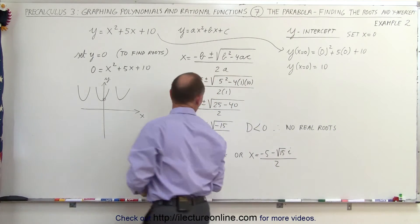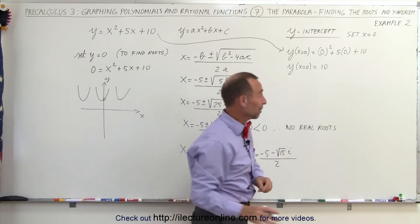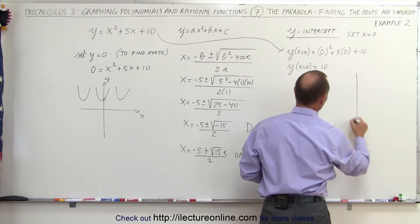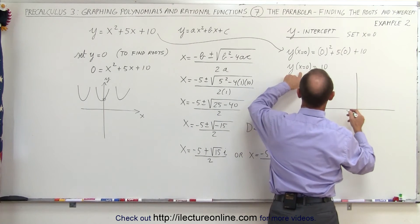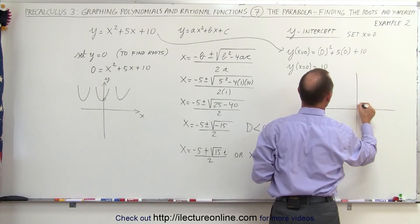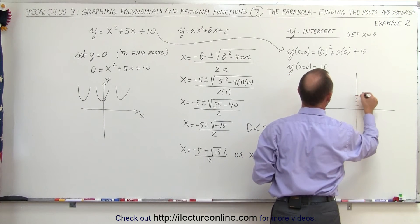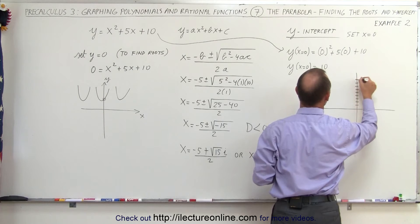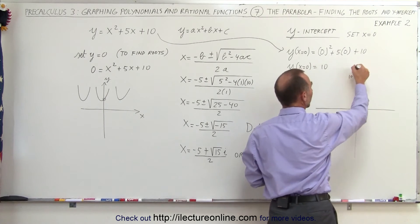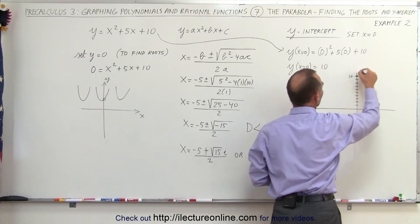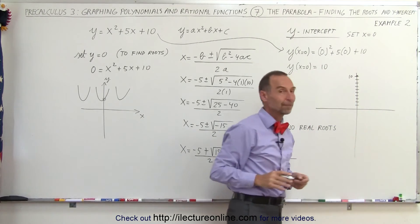So if we now draw a graph, I'm looking for room on my board to draw a graph. Let's do it over here. I know that the parabola will cross the y-axis at 1, 2, 3, 4, 5, 6, 7, 8, 9, 10, at y equals 10, right at that point. Now of course, we're not sure if the parabola looks like this or if it looks like this. We don't know yet.